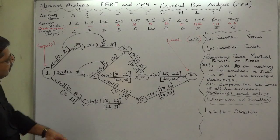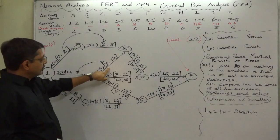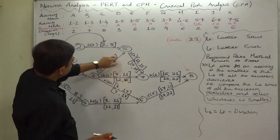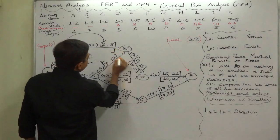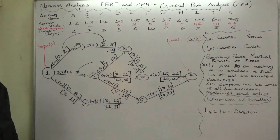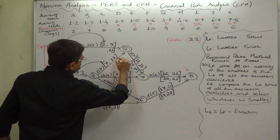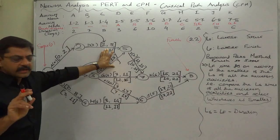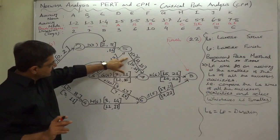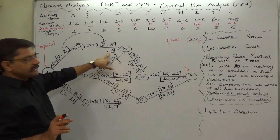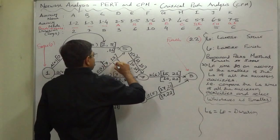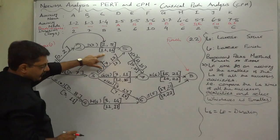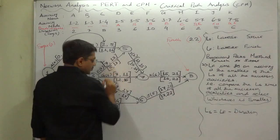I has two predecessors D and E, but both have only one successor, so there is no confusion. I's latest start time of 14 becomes the latest finish time of both D and E. If any activity has only one successor, the latest start time of the successor becomes the latest finish time of that activity. So: 14 minus duration 3 = 11 is the latest allowable start time for D; 14 minus 6 = 8 is the latest allowable start time for E.